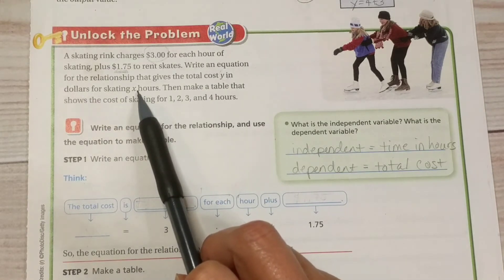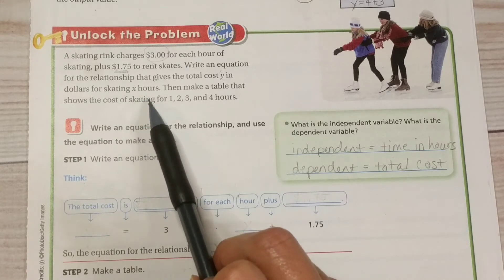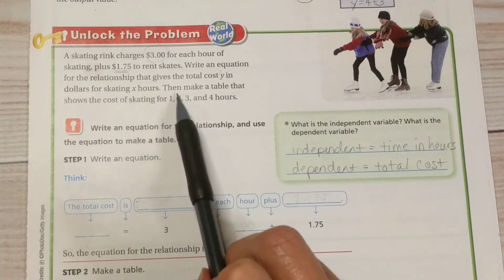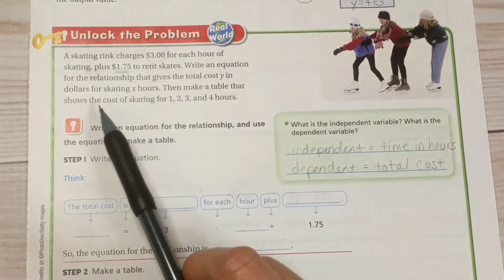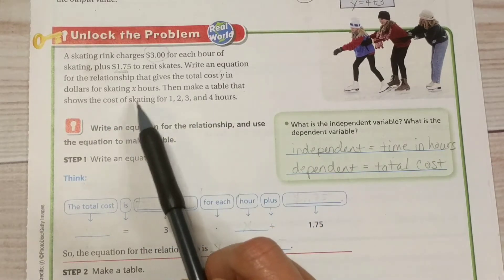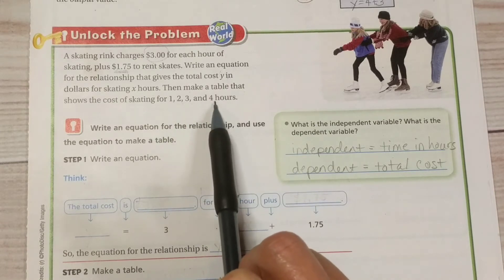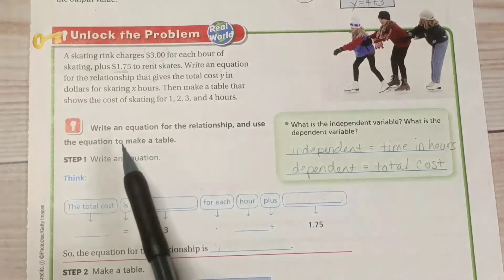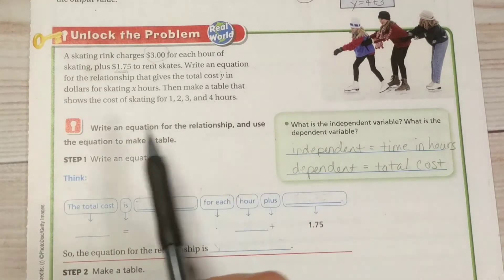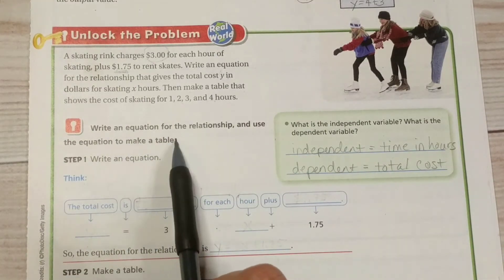We might get tired or injured after just one hour. Or we might skate three hours. We don't know yet. Then make a table that shows the cost of skating for one, two, three, and four hours. So first we're going to have to write an equation for the relationship and use the equation to make a table.